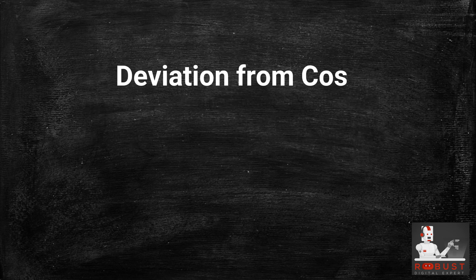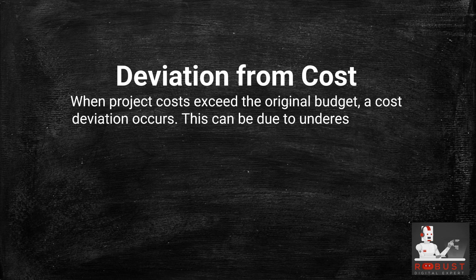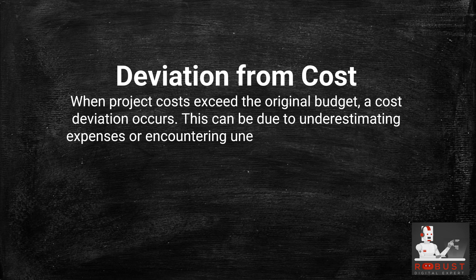Deviation from Cost: When project costs exceed the original budget, a cost deviation occurs. This can be due to underestimating expenses or encountering unexpected costs during the project.